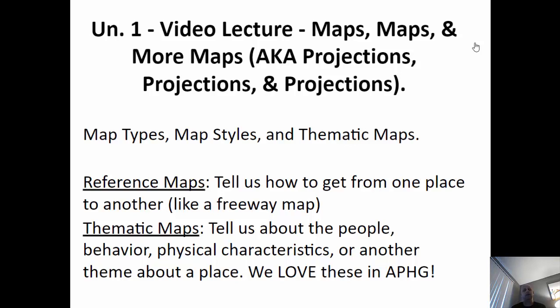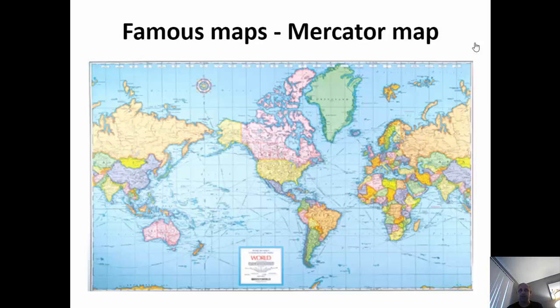The other category is what we love in human geography — this is a thematic map. That tells us about the people in an area: their behavior, their physical characteristics, or some other theme. We love these because we can analyze a place, we can analyze a group of people when we look at thematic maps. Reference maps we don't really use in this subject, but thematic maps are what you need to study and understand people and phenomena happening in a place. Always two categories — we tend to focus on thematic.